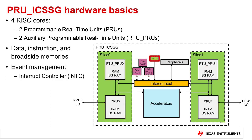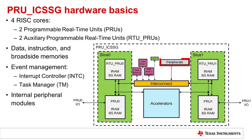The PRU-ICSS-G also has an interrupt controller, or INT-C, for monitoring and generating system events. This allows for both detection of peripheral events and communication with higher-level software running on the ARM, or with another PRU or RTU core. The INT-C is a polling-based interrupt controller. The PRU-ICSS-G also adds a new accelerator called the task manager accelerator, which enables preemption.